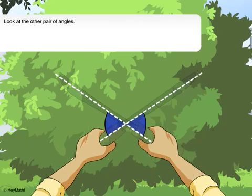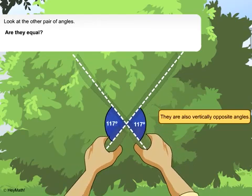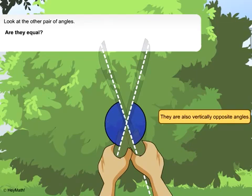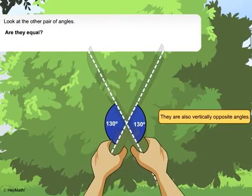Look at the other pair of angles. They are also vertically opposite angles. Are they equal? Yes, they are.